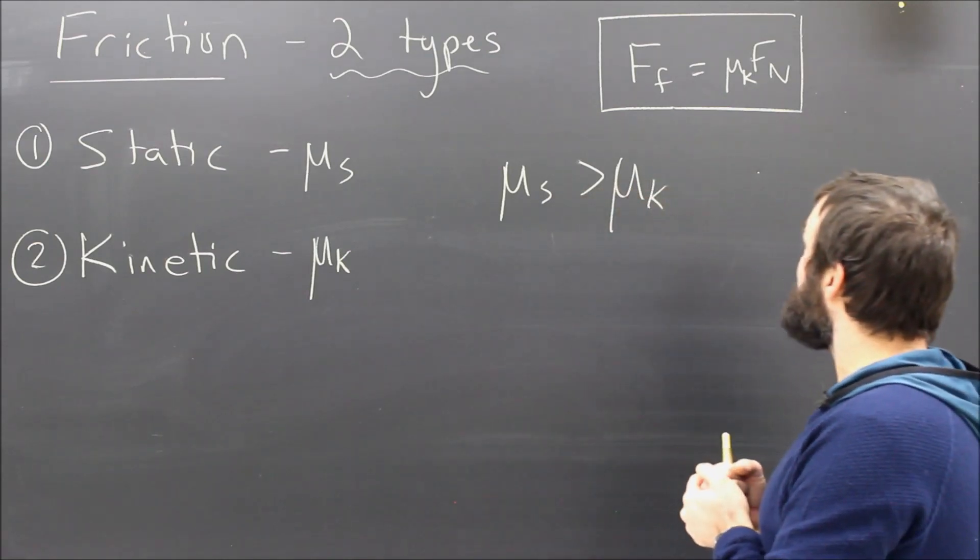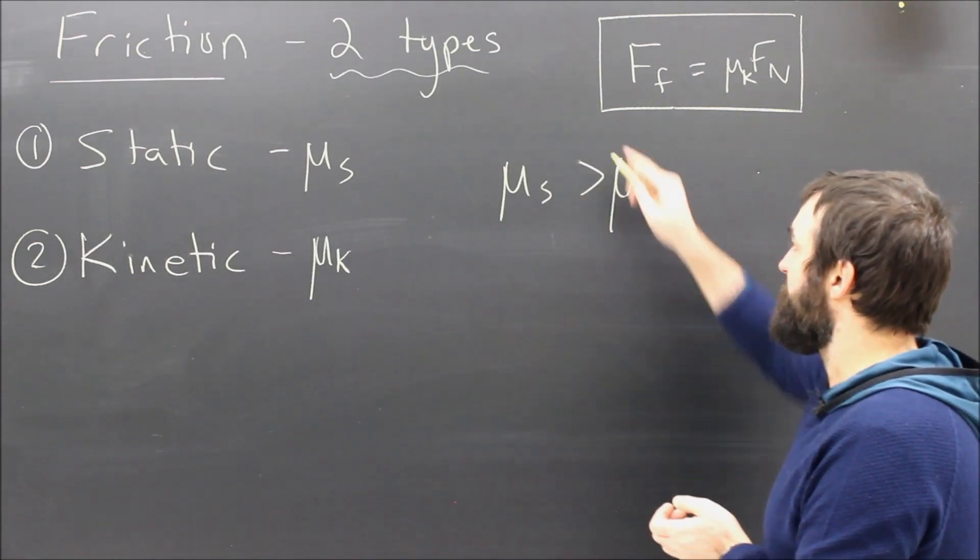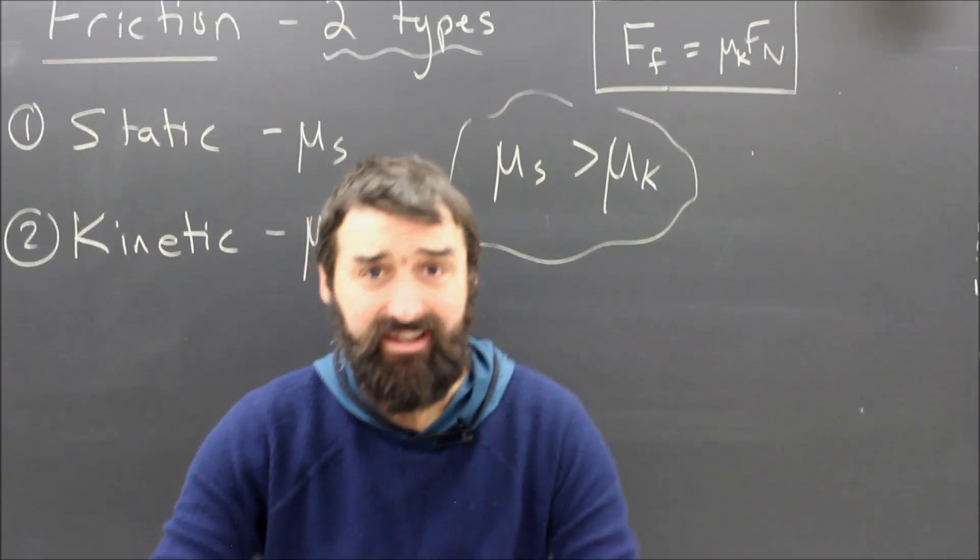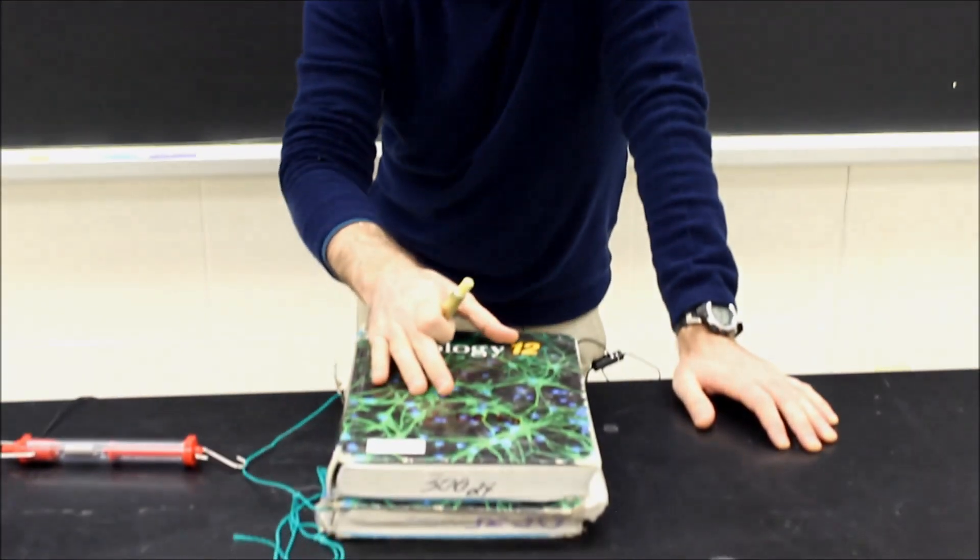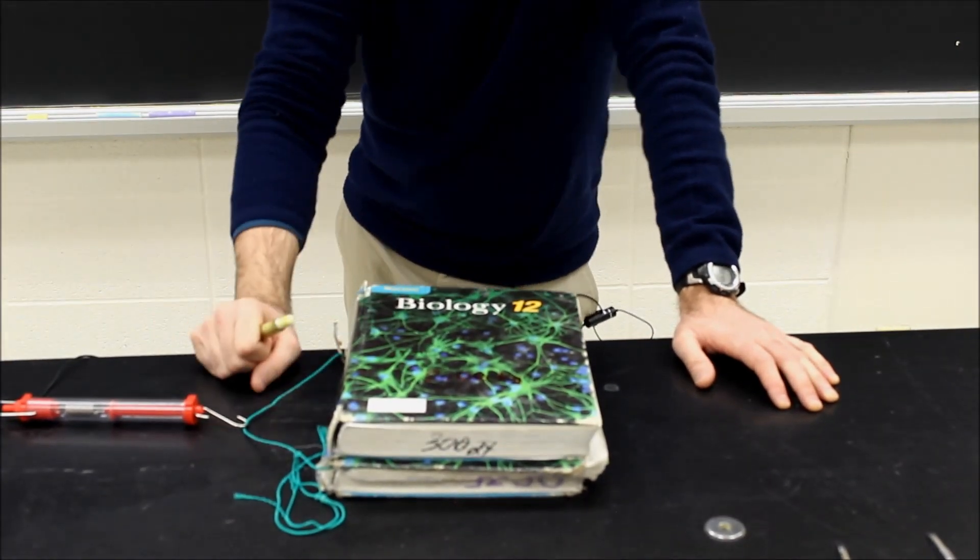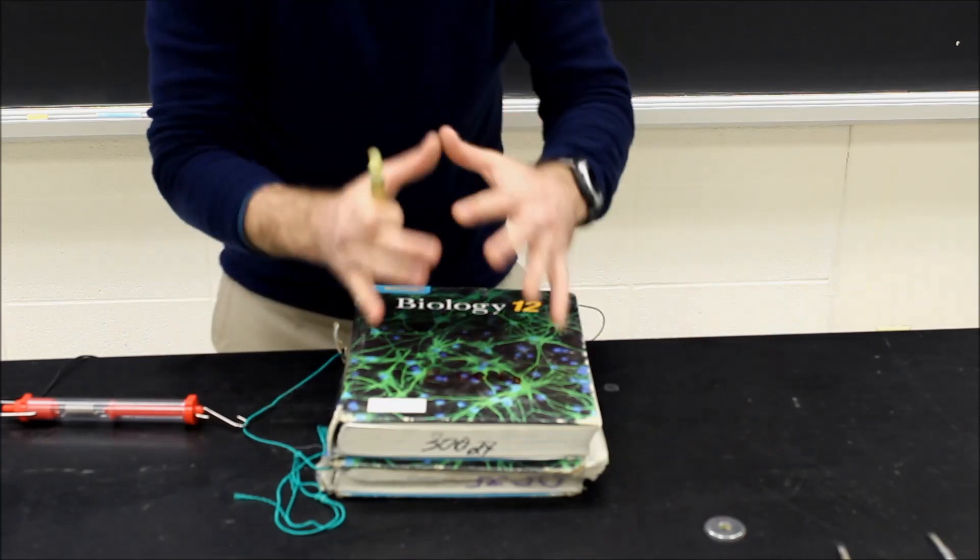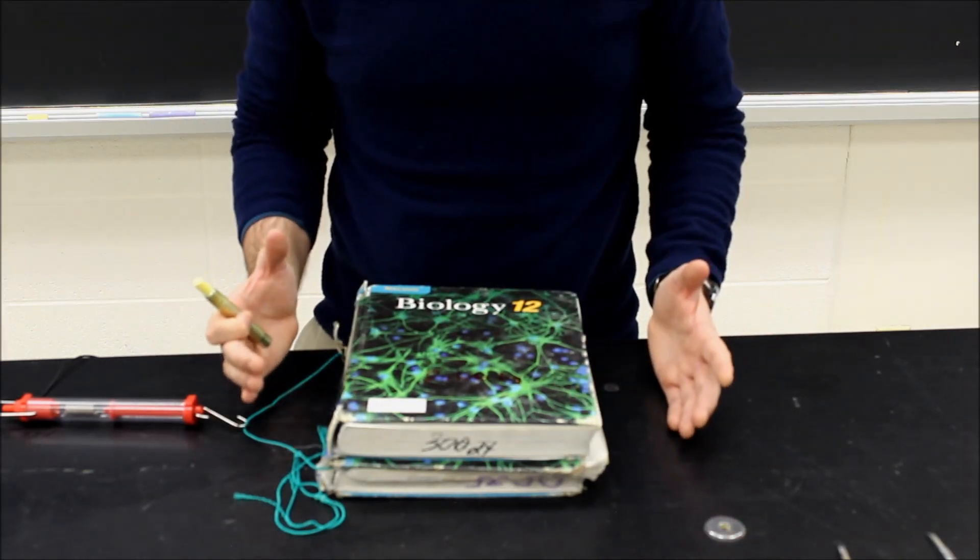But there's something else that we need to understand. If I look at my books again, and if I come down here, I can see right now that the friction acting on my books, can you see it? Can you see the forces? They're zero. How much friction is there on my book right now? It's got to be zero, right?